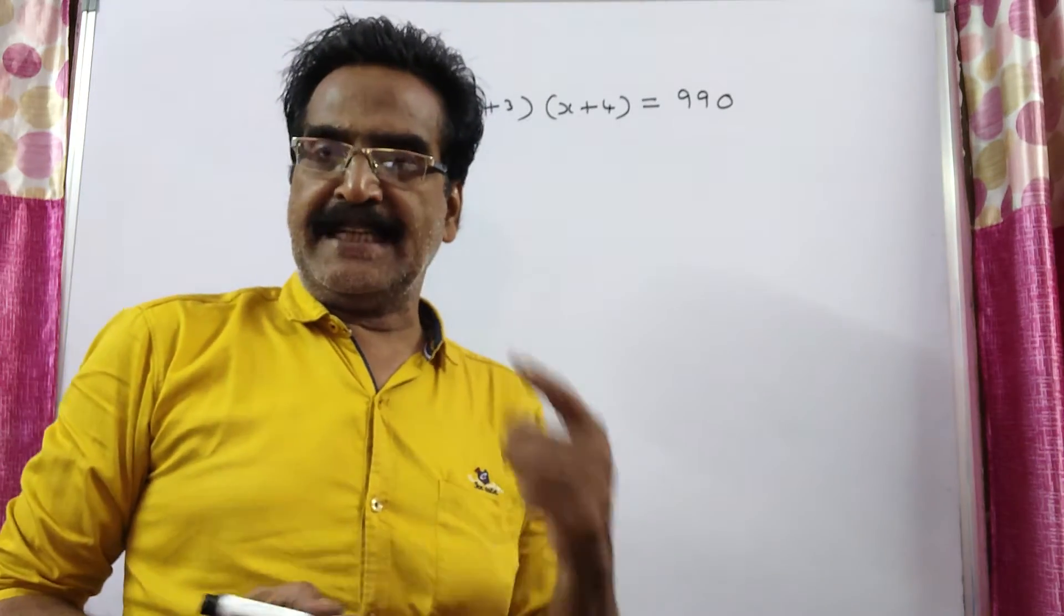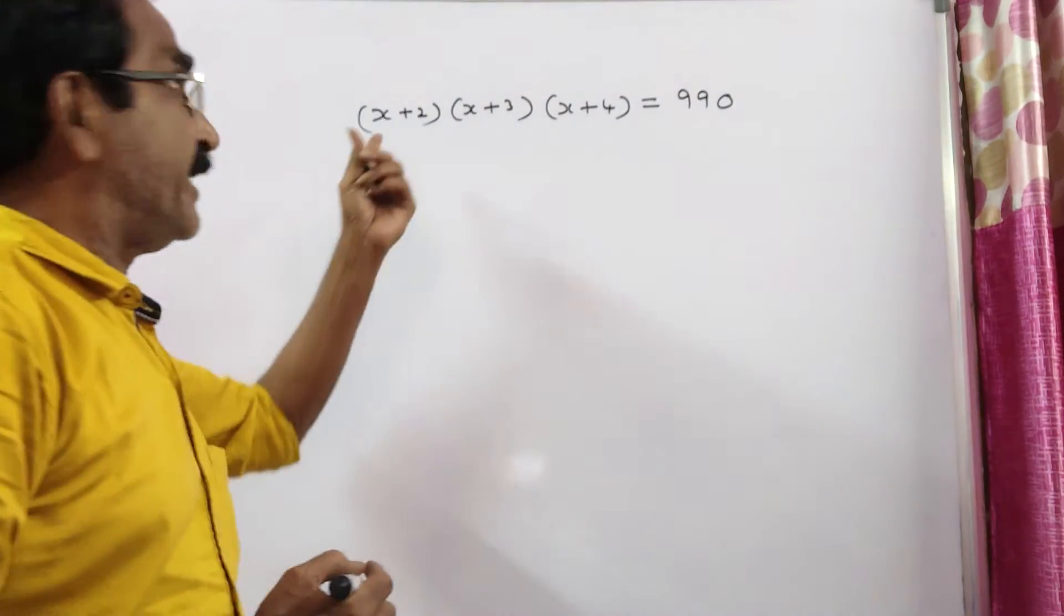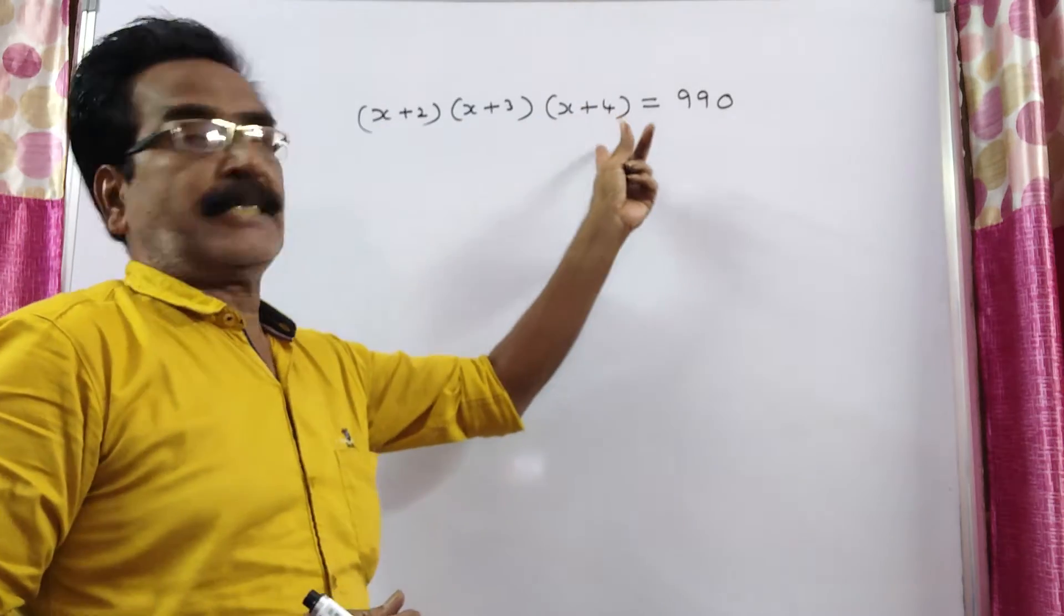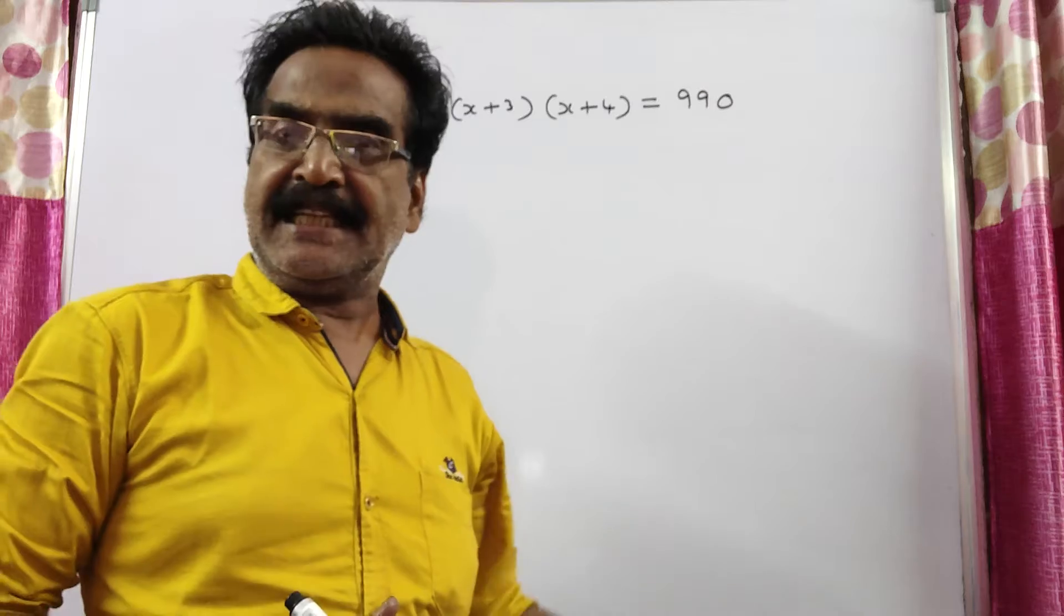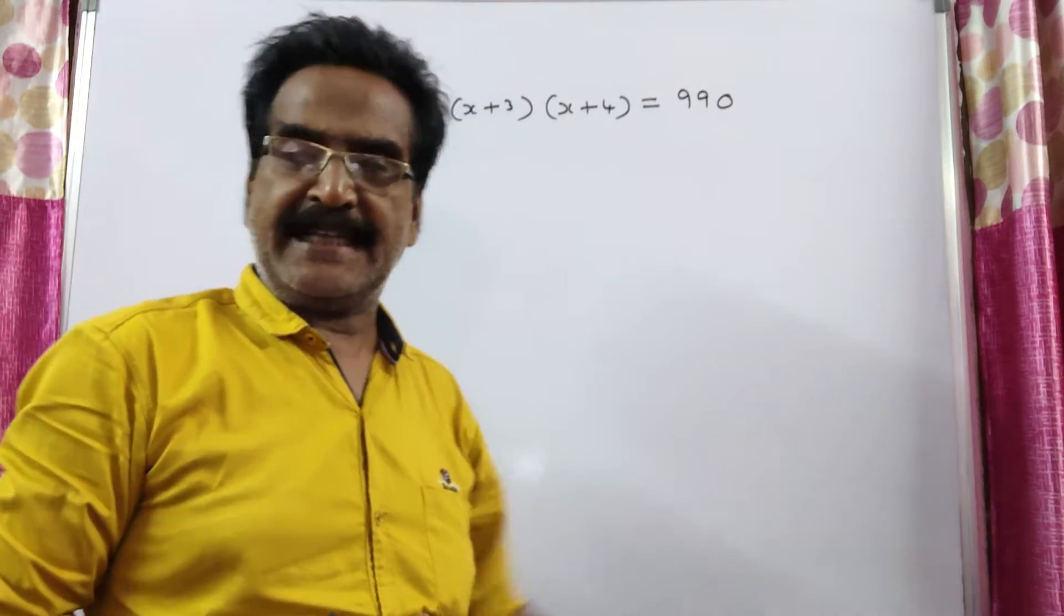Hi friends, good morning. Please look at the next problem in algebra. x plus 2 into x plus 3 into x plus 4 is equal to 990. What is the positive integral value of x?